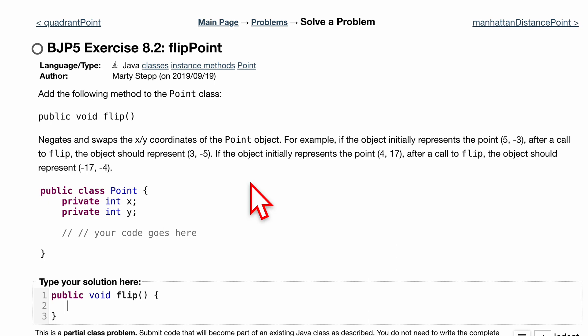essentially flip y and x—how the points are stored—and also flip their signage. So to do this, I'm going to first store x in a temporary variable.